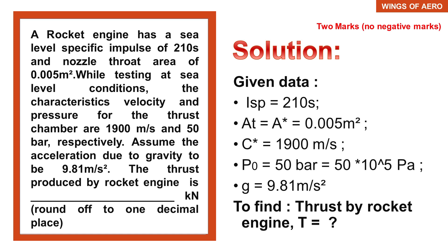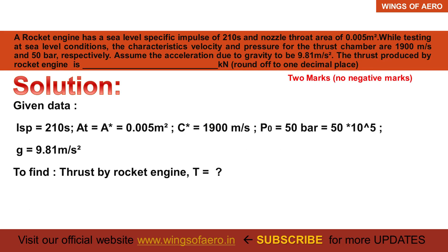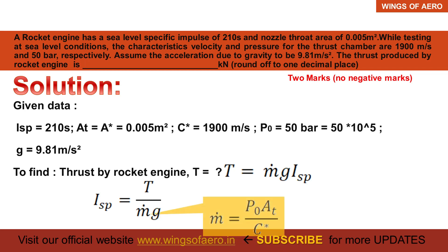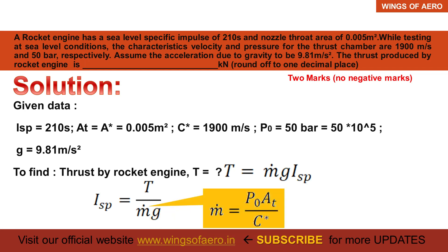From this given data we have to find the thrust T. We know the basic formula: thrust T equals mass flow rate times gravity times specific impulse. We know Isp and g, but we don't know the mass flow rate. So using the characteristic velocity formula, we can find the mass flow rate. The formula is: mass flow rate ṁ = P0 · A* / c*.